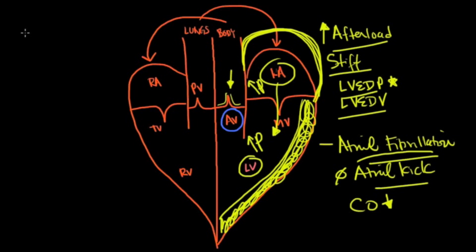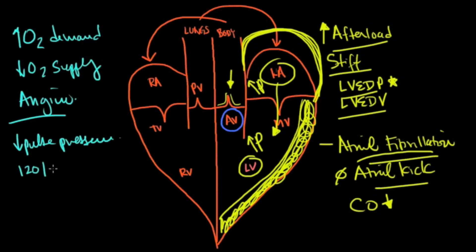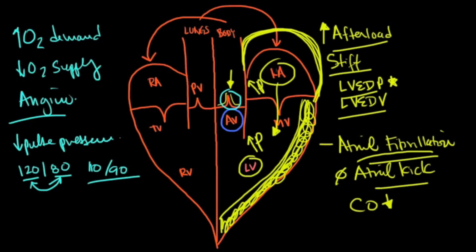Because of increased oxygen demand and decreased oxygen supply due to low left ventricular compliance, you get angina, shortness of breath, and syncope. You'll also see a low pulse pressure — instead of a normal 120/80 with a 40-point difference, the systolic and diastolic pressures are much closer together due to the aortic stenosis, and you might see something like 110/90.